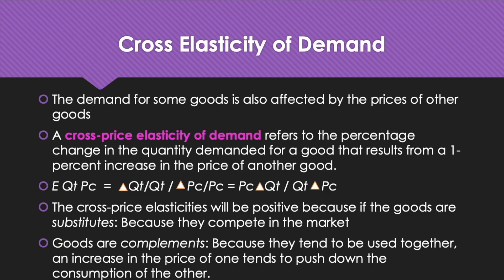The demand for some goods is also affected by the prices of other goods, such as substitutes and complements. This is measured by the cross-price elasticity of demand, which refers to the percentage change in the quantity demanded of a good resulting from a 1% increase in the price of another good. For example, the elasticity of demand for tea with respect to the price of coffee is denoted E(QT, PC), where QT is quantity demanded of tea and PC is price of coffee. This equals (ΔQT/QT) ÷ (ΔPC/PC), which equals PC·ΔQT divided by QT·ΔPC.